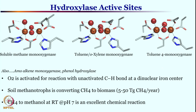By utilizing such soil methanotrophs, a huge amount of methane is converted to methanol — about 5 to 50 Tg of methane per year, which is overall 1 to 10 percent of methane in the air converted to methanol. This methane to methanol formation happens at room temperature under neutral pH conditions, making it one of the best reactions one can see in a biological or synthetic chemistry setting.